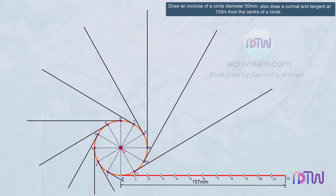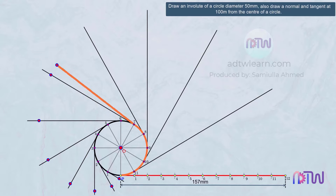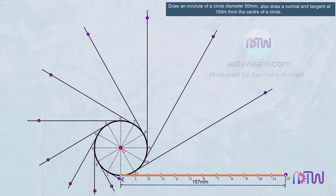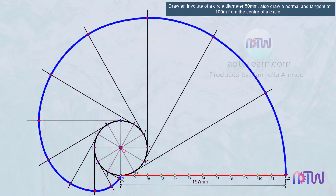Now we need to mark the length of the string on each of these lines. Imagine if the string unwinds from the circle and reaches this line — the endpoint of this string will be here. Next, when it reaches this line, the P point will be here, and so on. This will be the curve traced by this point, which we need to draw. To draw this curve, we need to get these points.